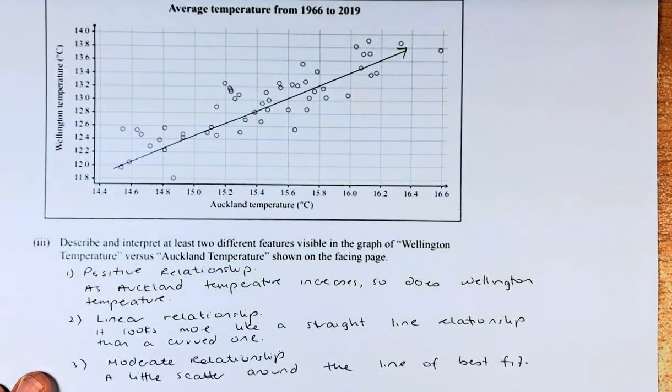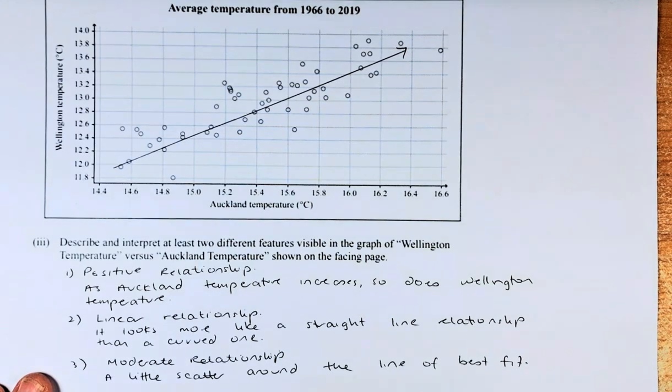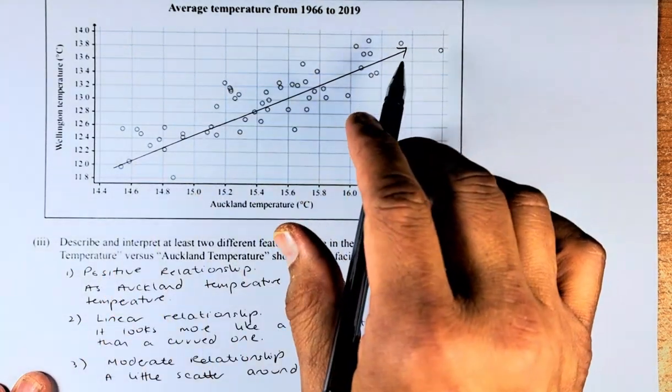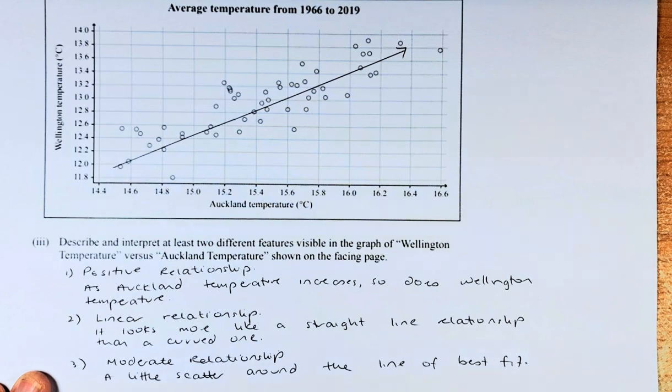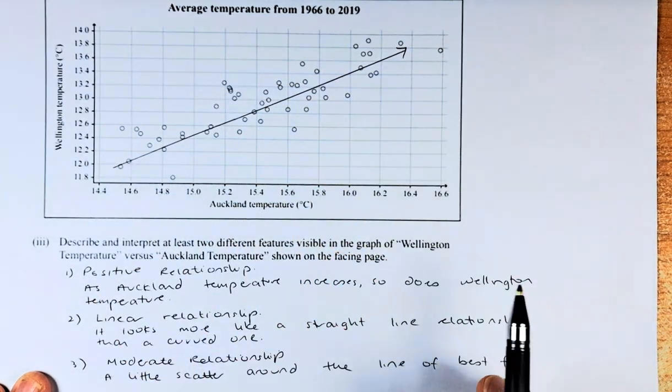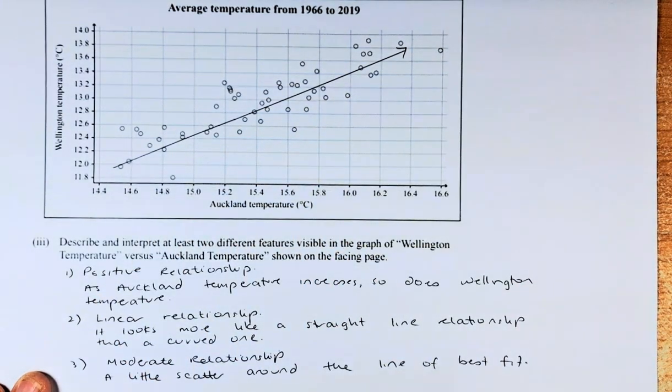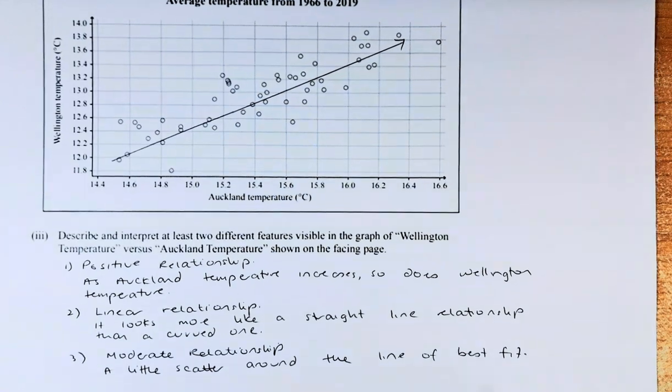The second point, you need to talk about whether it is a linear or non-linear. Does it look like a straight line or does it look like a curve? In my case, I would suggest that it looks more like a straight line, so I would say that this is a linear relationship.